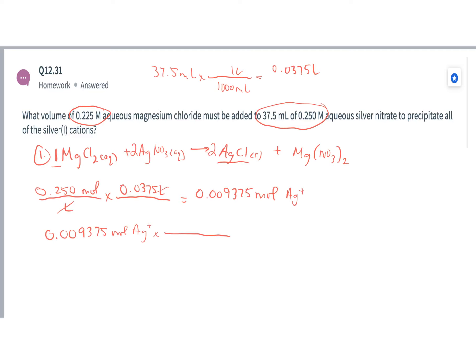because of that 1 to 2 ratio, I know I'm going to need 2. I'm going to have 2 moles of silver for every 1 mole of the magnesium chloride, just from the ratio in the balanced reaction.